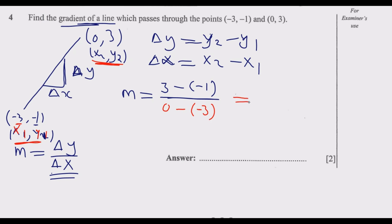Then you end up with 3 minus negative, which is positive. So 3 plus 1 over negative times negative is positive, so 3. This is 4 over 3.